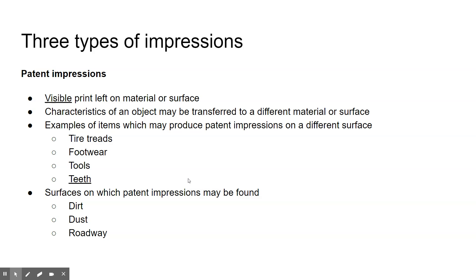There are three types of impressions. The first one is called patent, which means it's visible. This is what you get when the object is placed in something opaque and then the impression is transferred to a different surface when that object is placed on a new surface. You can find patent impressions such as tire treads, footwear treads, tool marks, or teeth marks — found in dirt, dust, on a roadway, or in the case of teeth marks, somebody's skin.